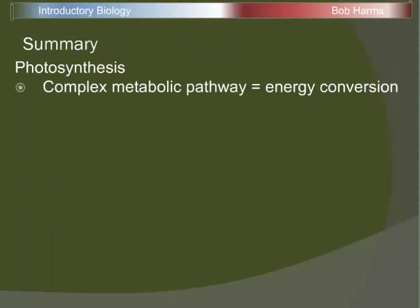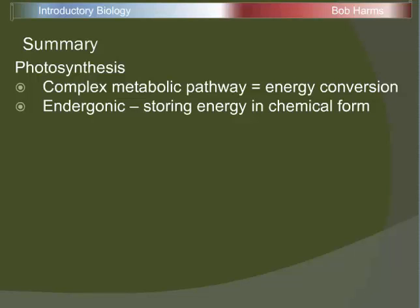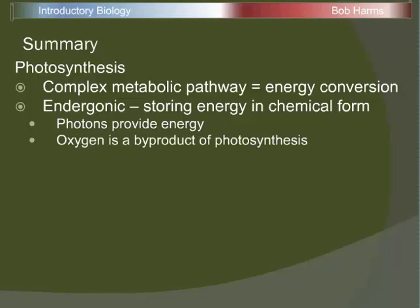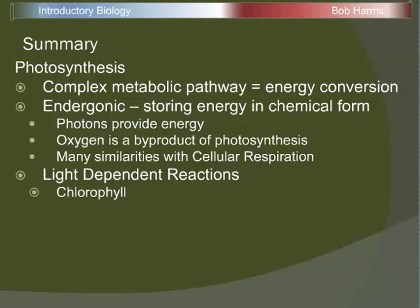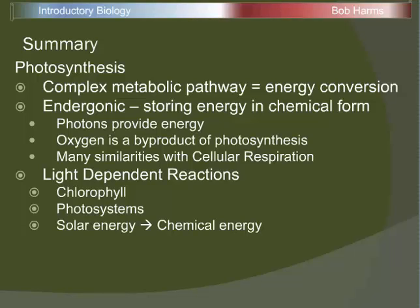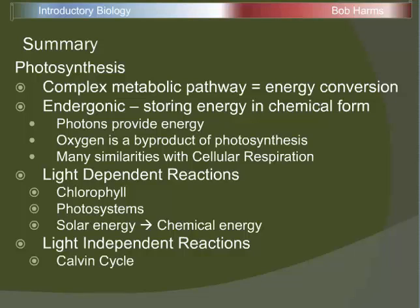To summarize photosynthesis: it is a complex pathway all about converting energy — in particular solar energy into chemical energy. It is an endergonic set of reactions, so we're storing up chemical energy. That energy comes from photons of light, and there are lots of different wavelengths traveling with different amounts of energy. Oxygen is also a byproduct. The light-dependent reactions require chlorophyll to absorb energy; chlorophyll is arranged in different photosystems with other members of the electron transport system, converting solar energy into short-term chemical energy. Then the light-independent reactions — the Calvin cycle — take that short-term chemical energy, fix carbon from the air, and generate three-carbon G3Ps, which are usually converted into sugars.